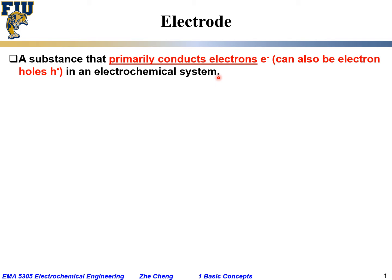After we talked about electrolyte and electrolyte solution, another important concept that we'll always come across would be the so-called electrode. Electrode is a substance or part of the electrochemical system that primarily conducts electrons, and sometimes it can also be electron holes. Remember, electrolyte is the substance that conducts charged ions and almost no electrons or electron holes. In comparison, electrode is a part in the electrochemical system that conducts primarily electrons — it can also be electron holes.